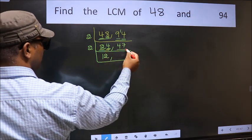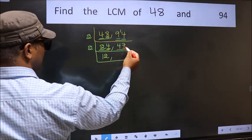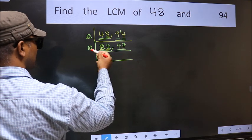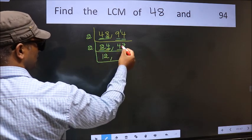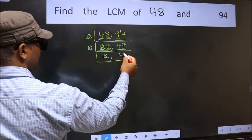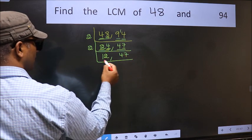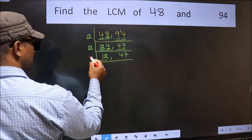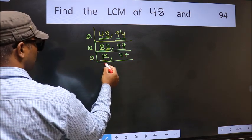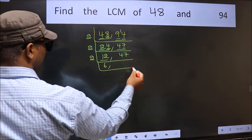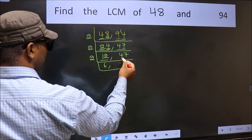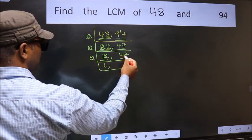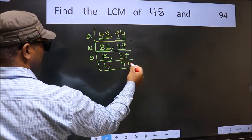Now the other number is 47. The last digit is 7, which is not even, so it is not divisible by 2. We write it down as it is. Now here we have 12 — 12 in the 2 table is 2 times 6 = 12. The other number 47 is not divisible by 2, so we write it down as it is.